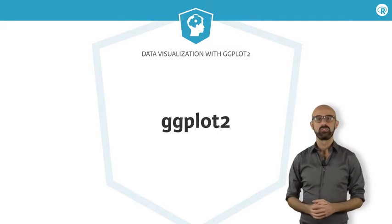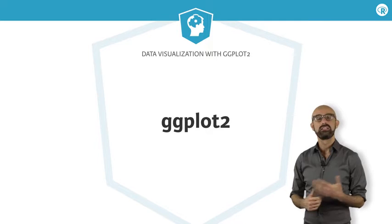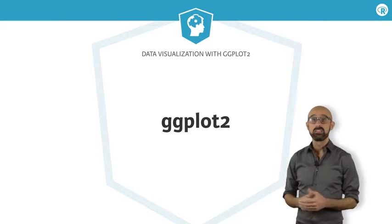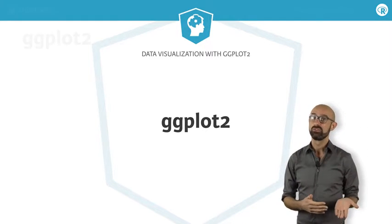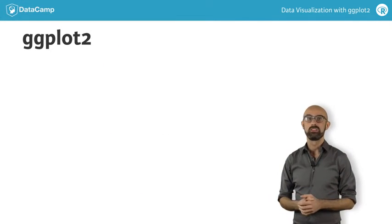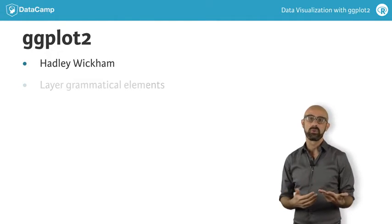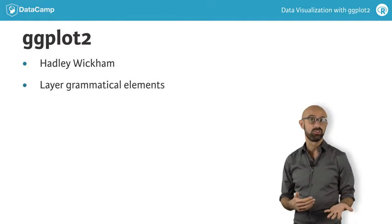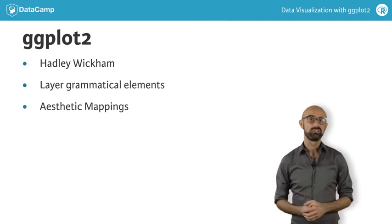Now that we have some idea about the different grammatical elements of graphics, let's see how this works in practice. The grammar of graphics is implemented in R using the ggplot2 package, which was one of the first packages developed by the prolific statistician and R programmer Hadley Wickham. Essentially, we construct plots by layering grammatical elements on top of each other, and use aesthetic mappings to define our visualizations.